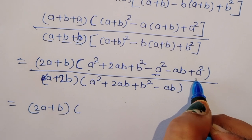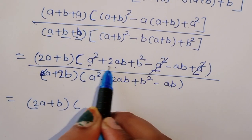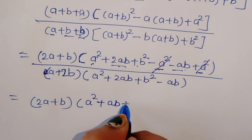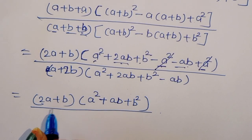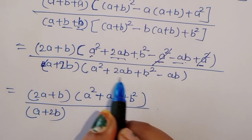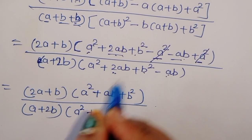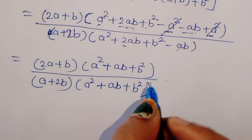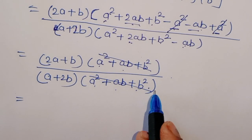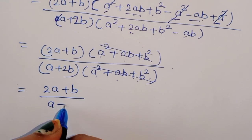After expanding and simplifying, the A² terms cancel in both numerator and denominator. The remaining factor in both is (A² plus AB plus B²), which cancels out completely. The left remaining terms are: numerator becomes (2A plus B) and denominator becomes (A plus 2B).